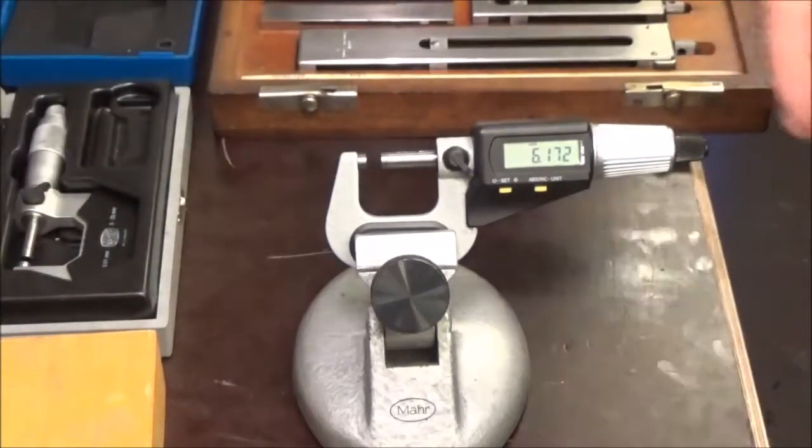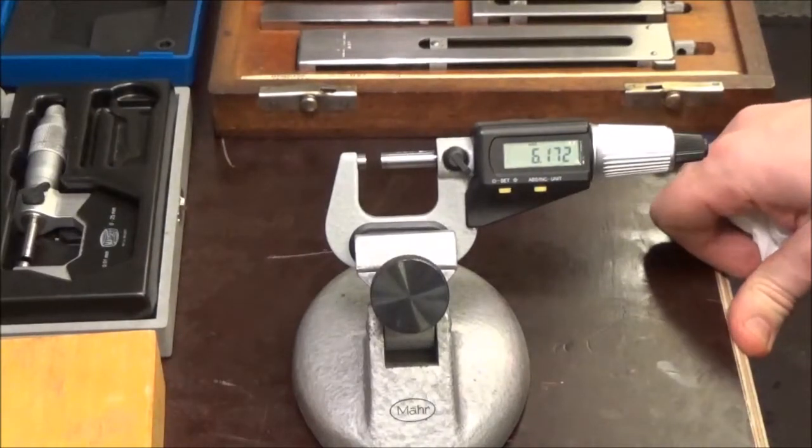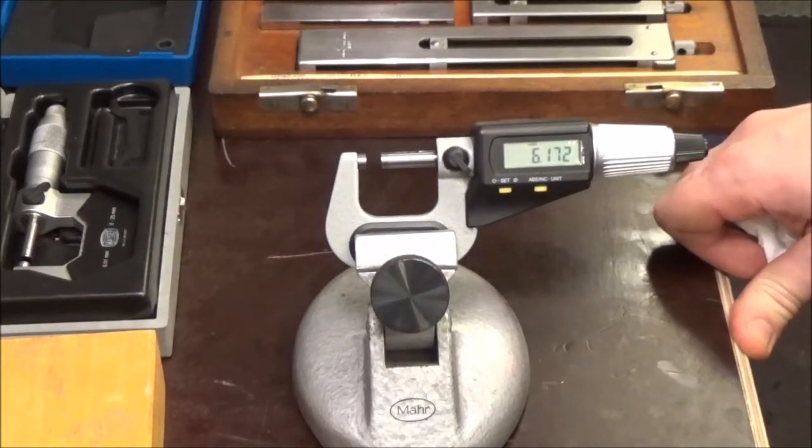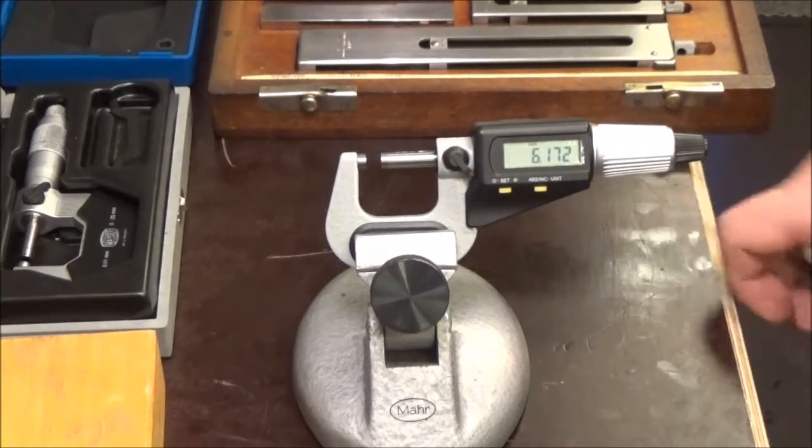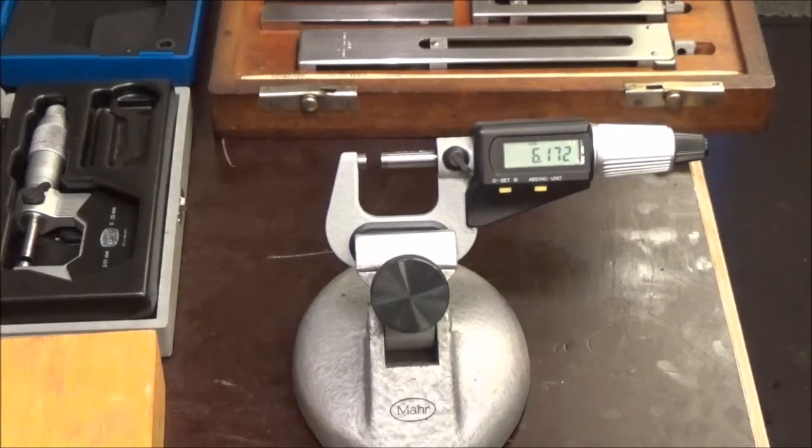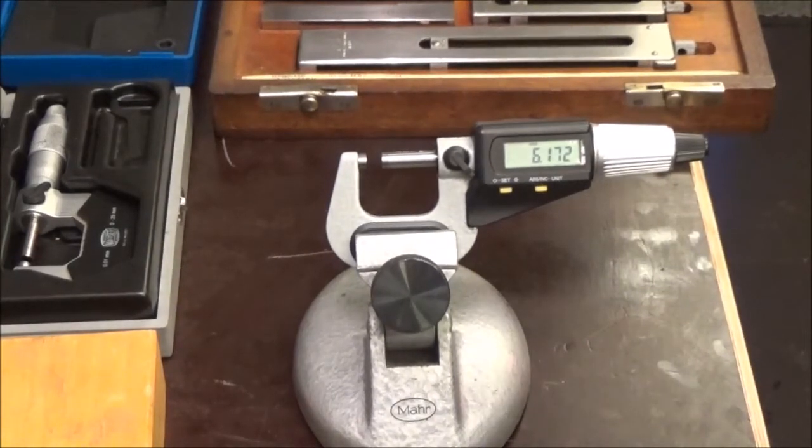For fifty bucks, I don't know what more you could expect. I haven't tested the IP65 rating by dropping it in water—I'm not keen to do that. But so far they check out and seem quite good. I bought the 0-25mm and the 25-50mm models.